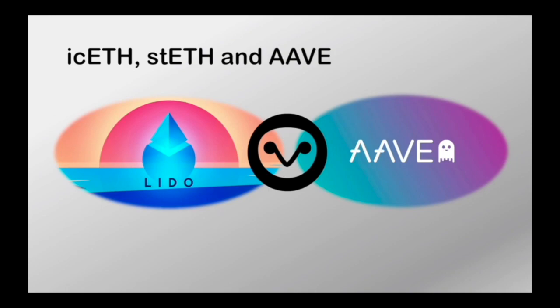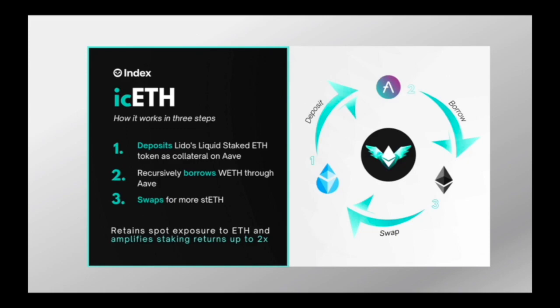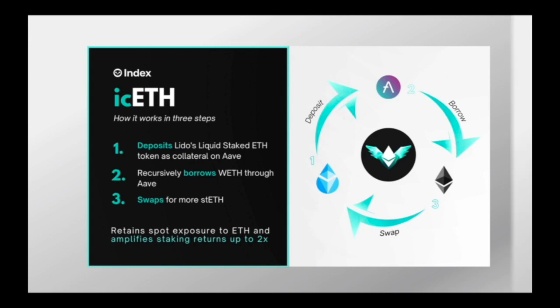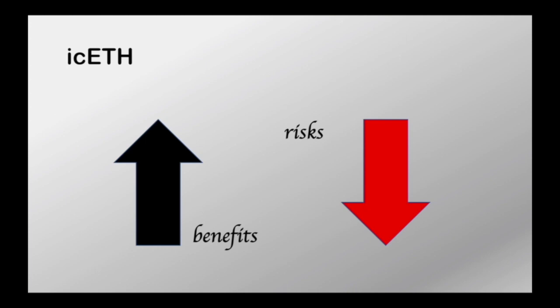Leveraged liquid staking is what icETH is doing. It essentially involves depositing staked ETH within Aave as collateral and borrowing ETH, then swapping for more staked ETH. That staked ETH is deposited as additional collateral in Aave, allowing more ETH to be borrowed and subsequently swapped for additional staked ETH. This cycle is repeated until reaching the target leverage ratio of 3.1x. If the index needs to de-leverage, it simply executes the same process in reverse — exchanging staked ETH for ETH, reducing the debt position in Aave, and repeating until reaching the target leverage ratio.